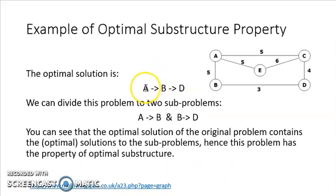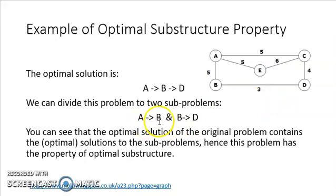The optimal solution is path A-B-D with cost 8. We can divide the original problem of going from A to D into two sub-problems: first going from A to B, then from B to D. We want to check whether this optimal solution contains optimal solutions to those sub-problems. If it does, we say the problem follows the optimal substructure property; if not, it does not follow the property.